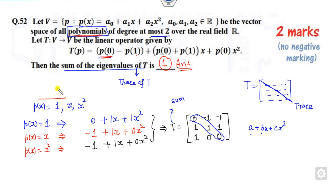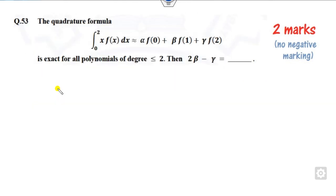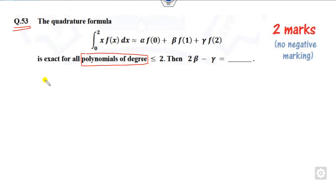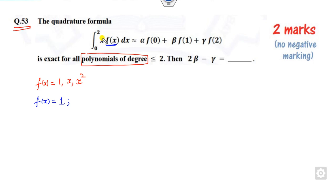Now for question 53, also two marks. Again it involves a polynomial of degree 2, but this time with integration as the linear transformation. The approach is the same — consider the polynomial basis. When f(x) = 1: the integral of x·1 from 0 to 2 is x²/2 evaluated from 0 to 2, giving 2. This equals α plus β plus γ.